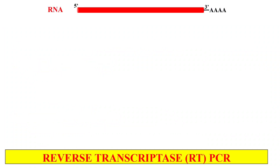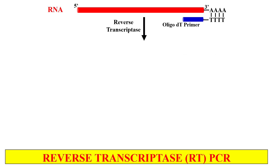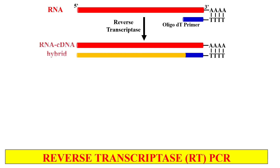In this slide, the procedure of reverse transcriptase PCR will be discussed. This red strand represents the RNA which we want to amplify, and at the 3' position you can clearly see the poly-A tail. First of all, we have to convert this RNA into cDNA, and for this we will use the enzyme reverse transcriptase. Reverse transcriptase requires a primer to start the synthesis, so we add an oligo-dT primer. As we know, complementary to adenine is thymine, so the oligo-dT primer attaches itself to the poly-A tail of the RNA. As the oligo-dT primer is attached, we add the reverse transcriptase enzyme, and it will extend or synthesize new DNA from this RNA. Now we have an RNA-cDNA hybrid — the red strand represents the RNA, while the mustard color strand represents the cDNA.